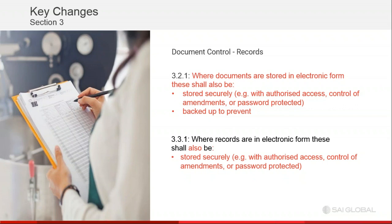There are brand new additions to document control and records control. For instance, where documents are stored in electronic form, these shall also be stored securely. Similarly, electronic records will be stored securely. These are also to support alignment with other global trends as well as FSMA requirements. FSMA also has electronic records requirements, so these are lining up with other regulations out there.